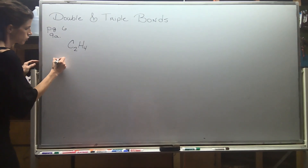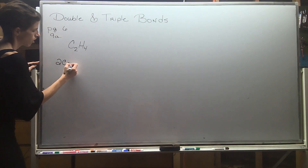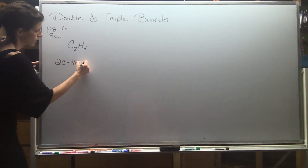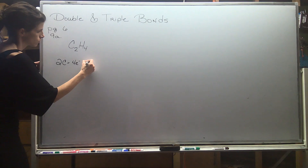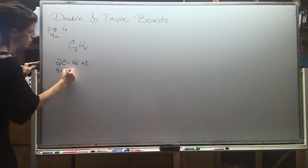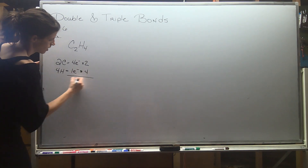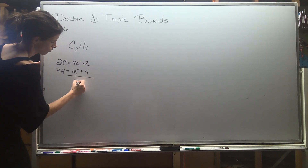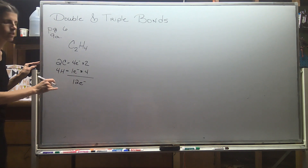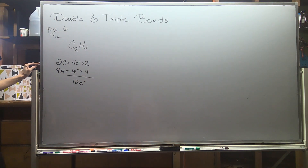Let's start with the electron math. We have two carbons — carbon is in group four, so four electrons times two. And we have four hydrogens, one electron times four, giving us a total of 12 electrons to build our Lewis dot structure.